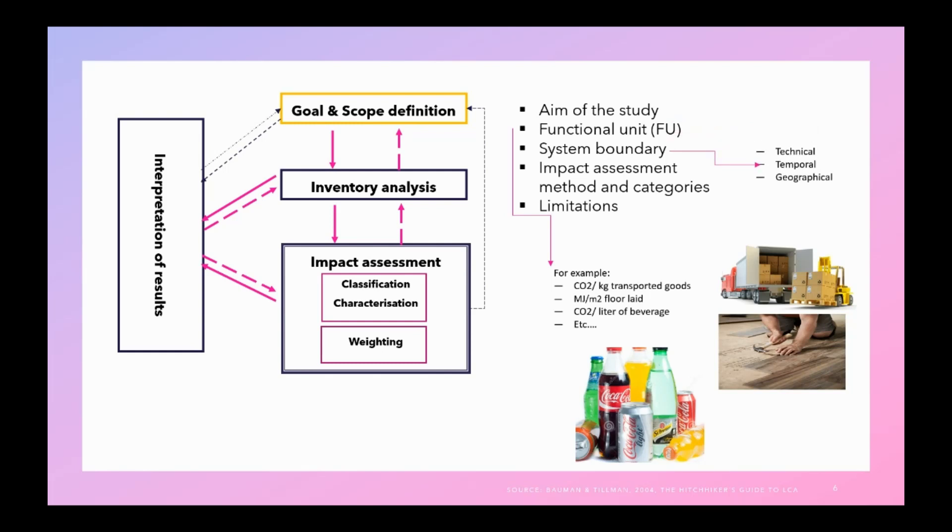So when it comes to system boundary descriptions, it should include technical, temporal, and geographical aspects. Technical means what processes are included and what are excluded. At what time the study is going to be conducted. And at what locations the results are valid. For example, if the production and consumption of a product is in Sweden or within the EU, then the results are valid within this geography. As the conditions are described, these results cannot be valid, for example, for the US or for China.